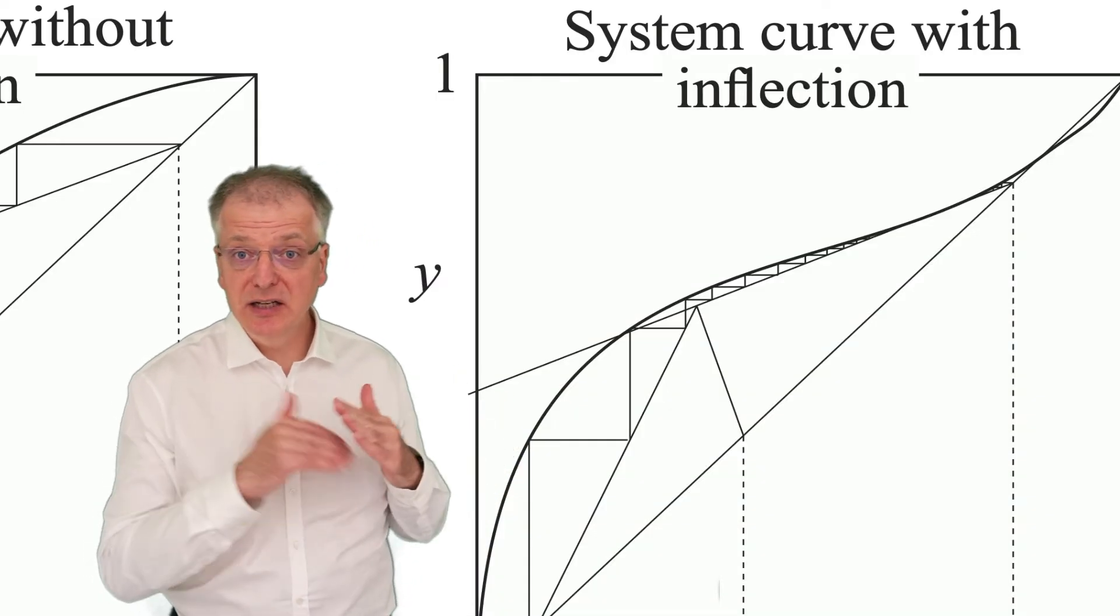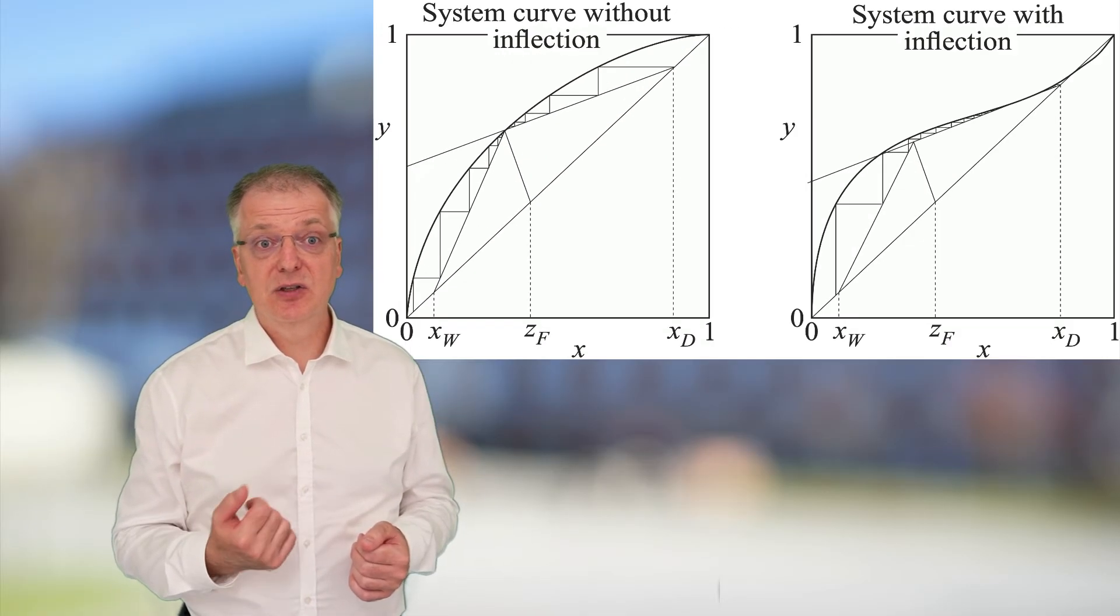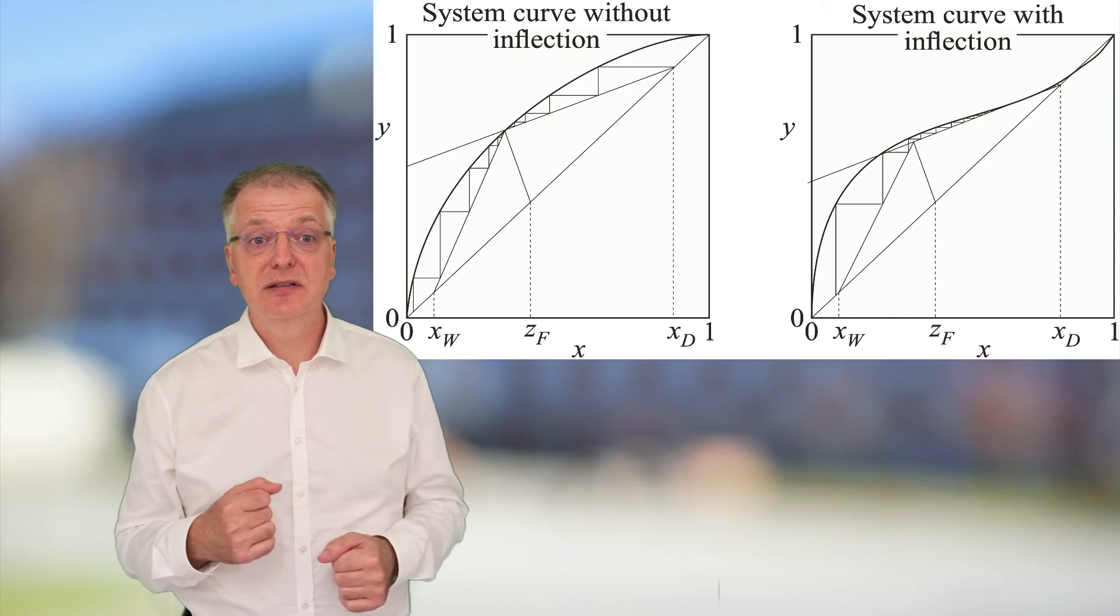This happens when the upper operating line either becomes the tangent to the system curve or when the upper operating line intersects the Q line where the Q line intersects the system curve.